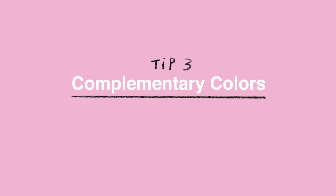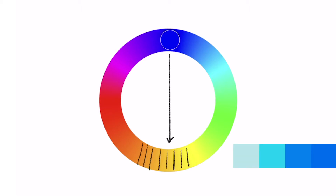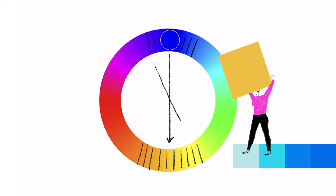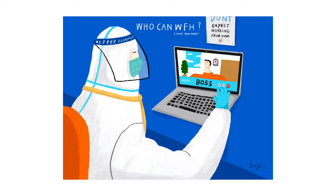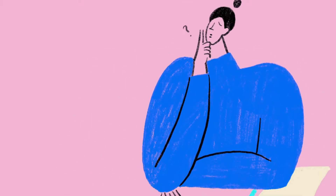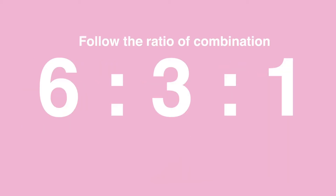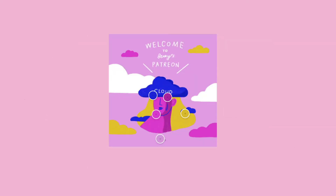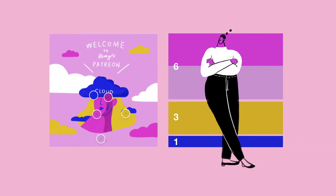Tip 3 is complementary colors. You can use colors opposite to each other as your secondary color. Usually I will use it as my secondary color in my drawing to highlight elements and make them pop. Here is my drawing using this color scheme. How do you arrange your colors in your drawing or design? I'd suggest 60%, 30%, and 10%. Use 60% as the main color, 30% as secondary colors, and 10% as pop-up colors like complementary. I think this is a good formula to follow.